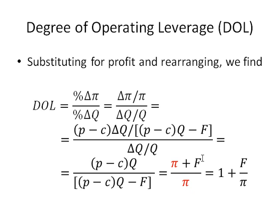And then we can actually break this fraction up into two terms here. The first term is just profit divided by profit, which becomes 1. And the second term is just F divided by pi, F divided by profit.